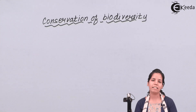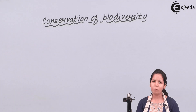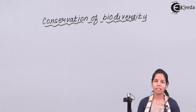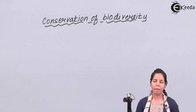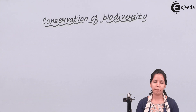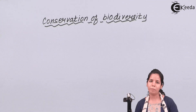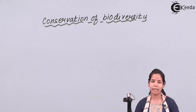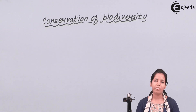When I talk about ex-situ conservation, it means removing that animal from its natural habitat and protecting it at some safer place. For example, a tortoise — when you keep it in its natural habitat of a river and protect it there, that is in-situ conservation. But when you remove that tortoise and keep it in another zone or at another place inside a cage where water is present, that will be ex-situ conservation.